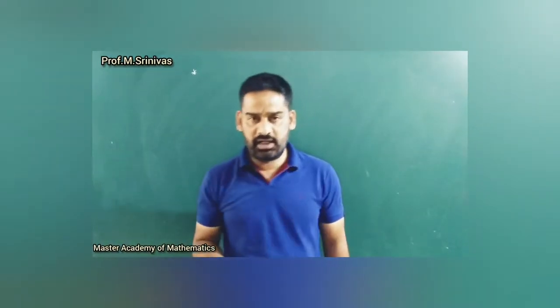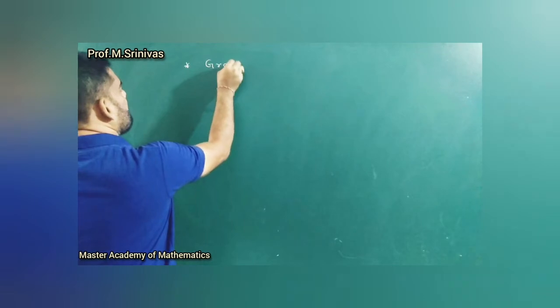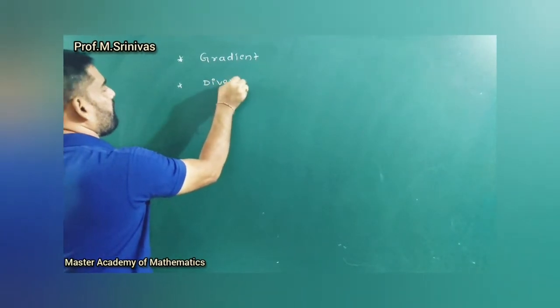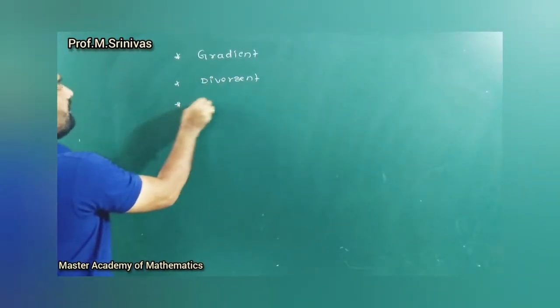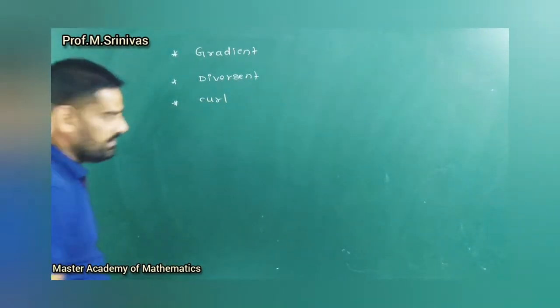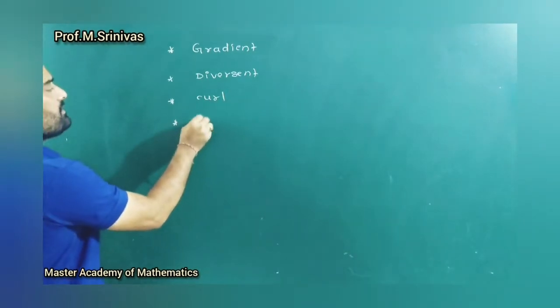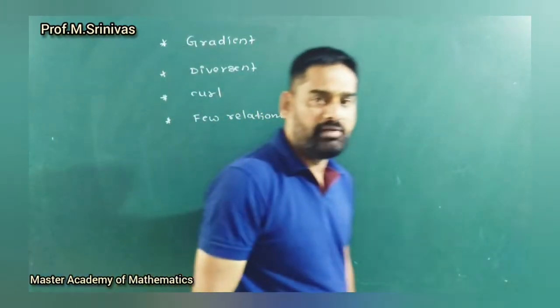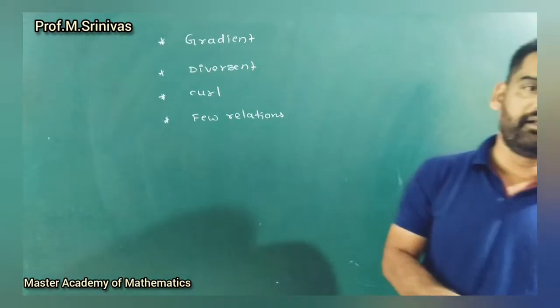Welcome back to Master's Academy of Mathematics. Today we discuss the fourth unit: vector differentiation. When you enter into vector differentiation, we need to think about the vector differential operator first. This vector differential operator is divided into three cases: one is gradient, the next one is divergence, and the third one is curl. After that, there are a few relations between these.